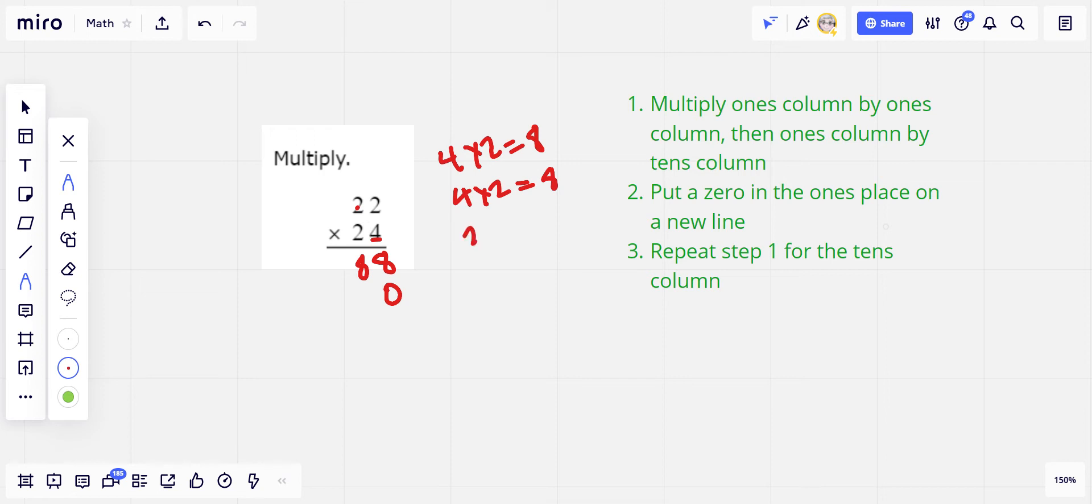So we do two times two, that's four, and then another two times two, also four, and then the last step is we have to add these together. Eight plus zero, eight. Eight plus four is 12, so two goes down here, one gets carried, and then four and one is five, so our answer is 528.